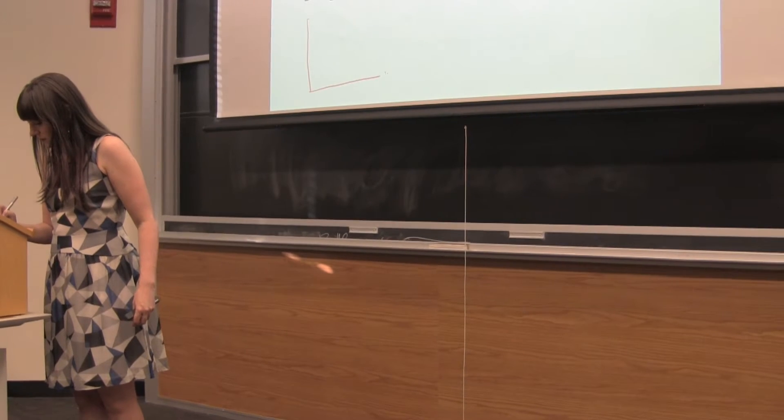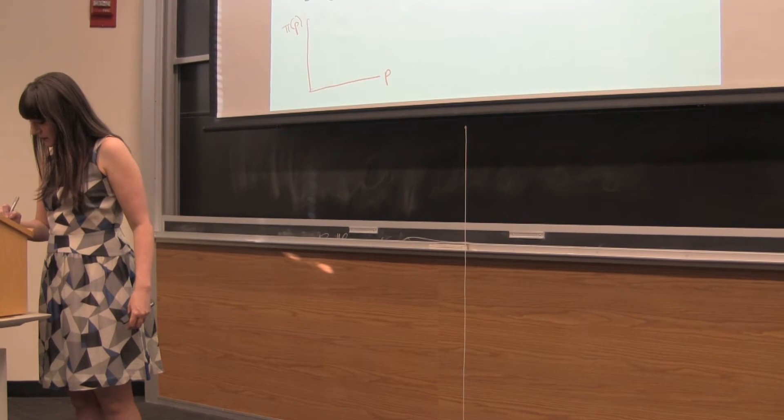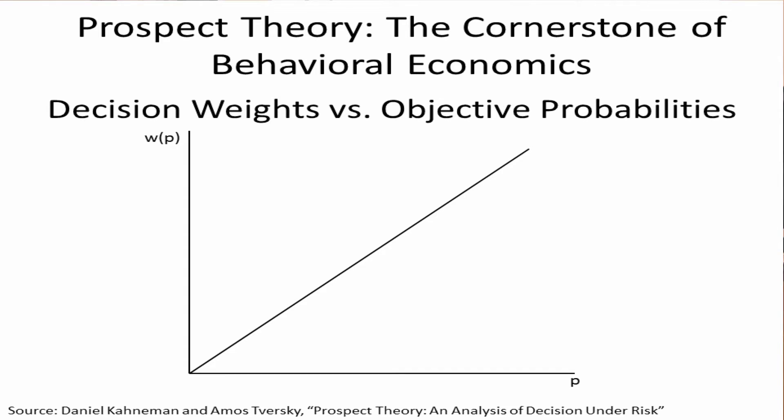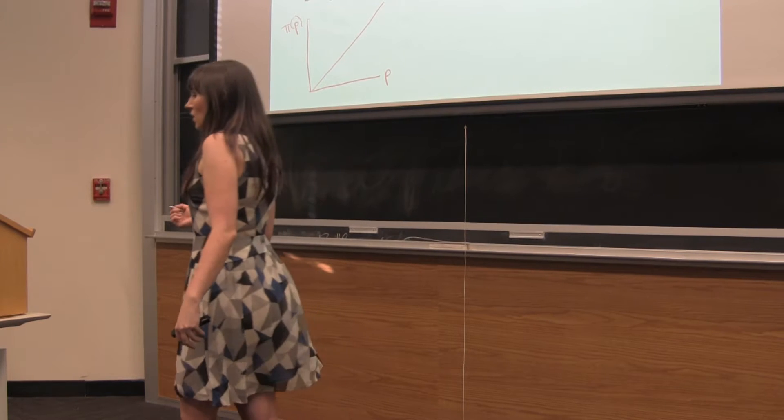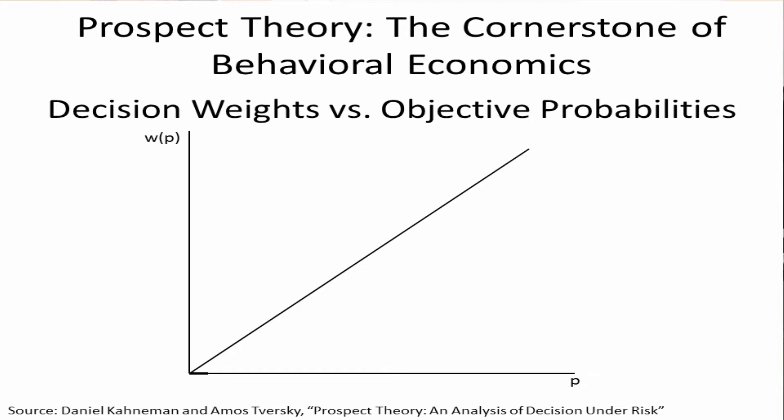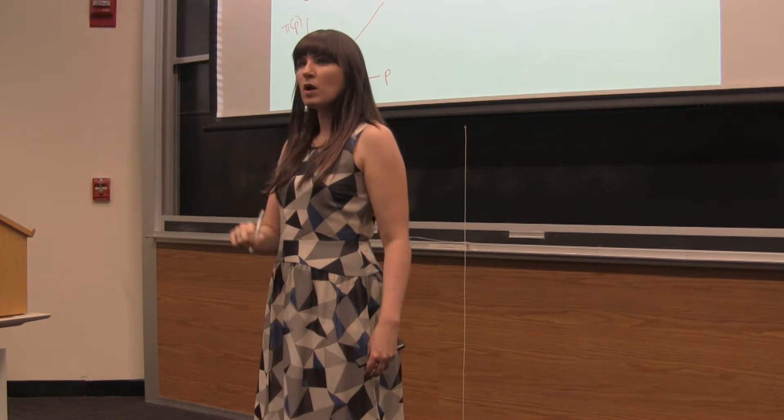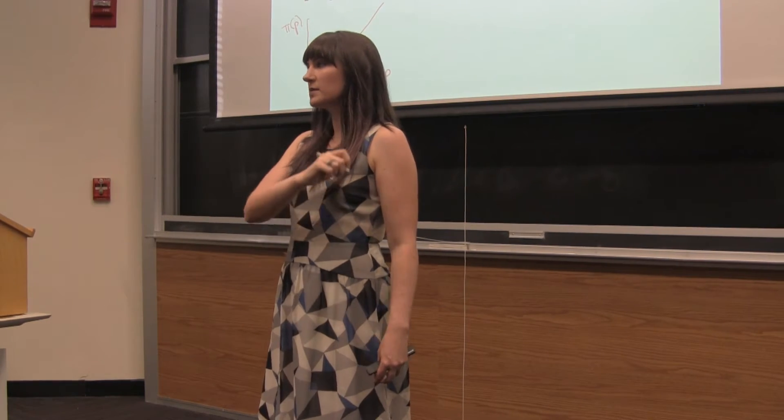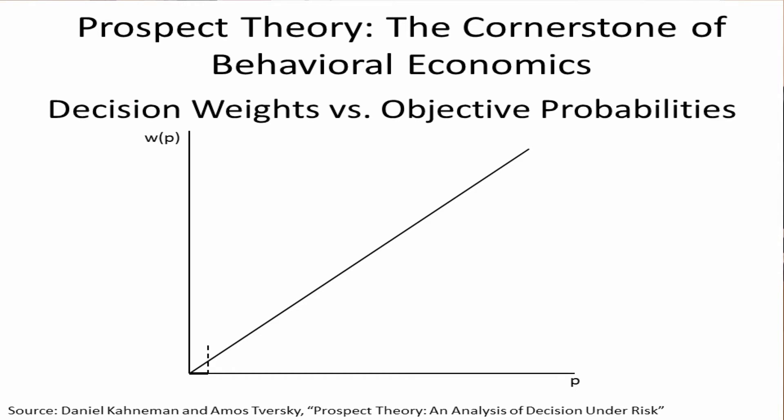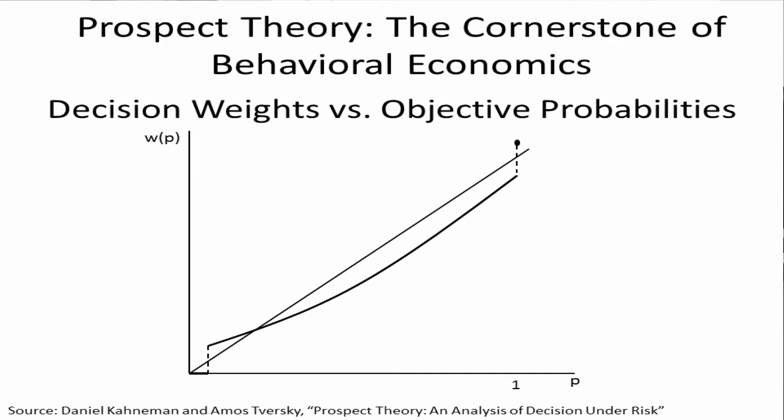If we're going to think about the objective probability versus the decision weight, and we said here's our 45 degree line, here's what the world would look like if we were just mapping perfectly. We said if a probability is really small, we round it to zero. But we also said if a probability was small but not small enough to round to zero, then we tend to overweight it. Remember, we have this discontinuity here, and then the rest of our curve looks something like that, right?